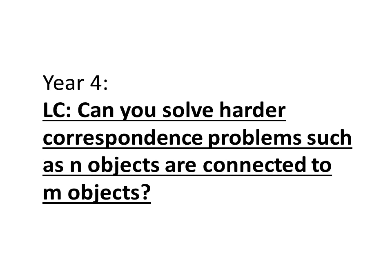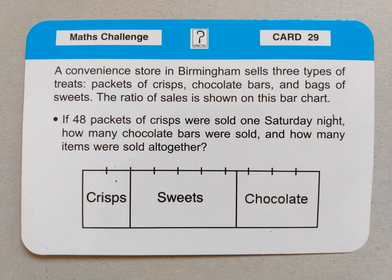I think you will love these ones. So our first problem — I'll read it through with you. A convenience store in Birmingham sells three types of treats: packets of crisps, chocolate bars and bags of sweets. The ratio of sales is shown on this bar chart. If 48 packets of crisps were sold one Saturday night, how many chocolate bars were sold and how many items were sold all together?